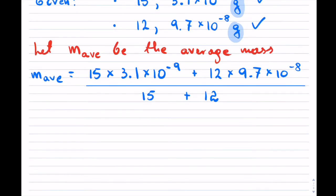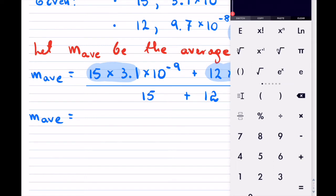It is scientific notation so it's going to be a little bit tricky. We have 15 times 3.1, so this gives us 46.5 times 10 to the negative 9.